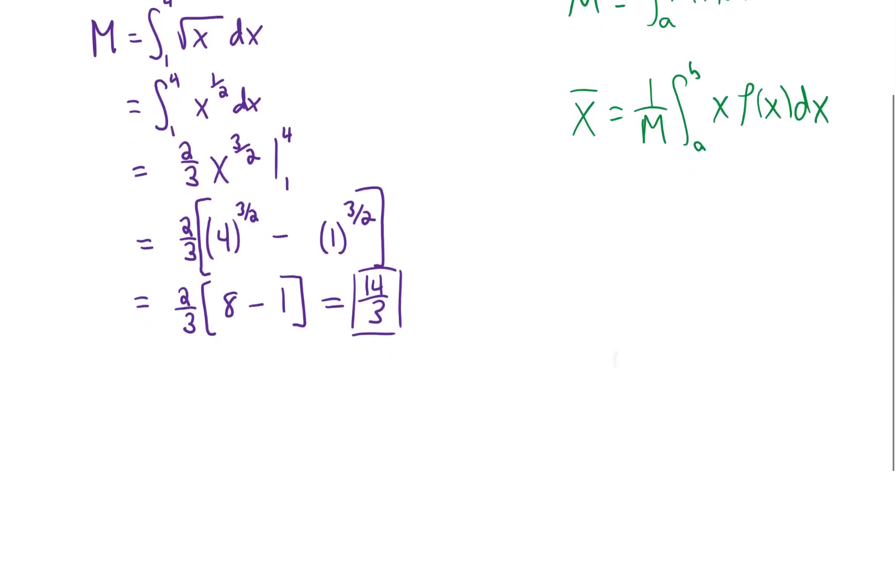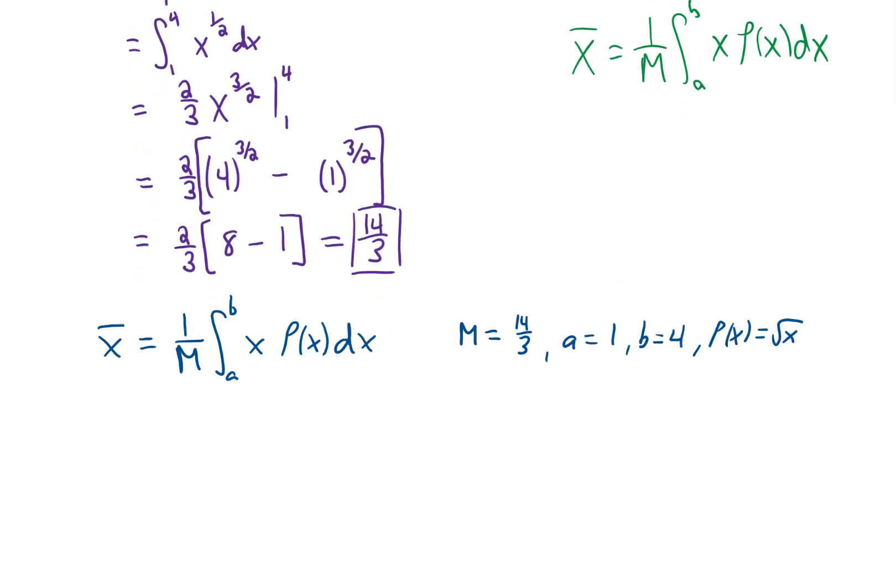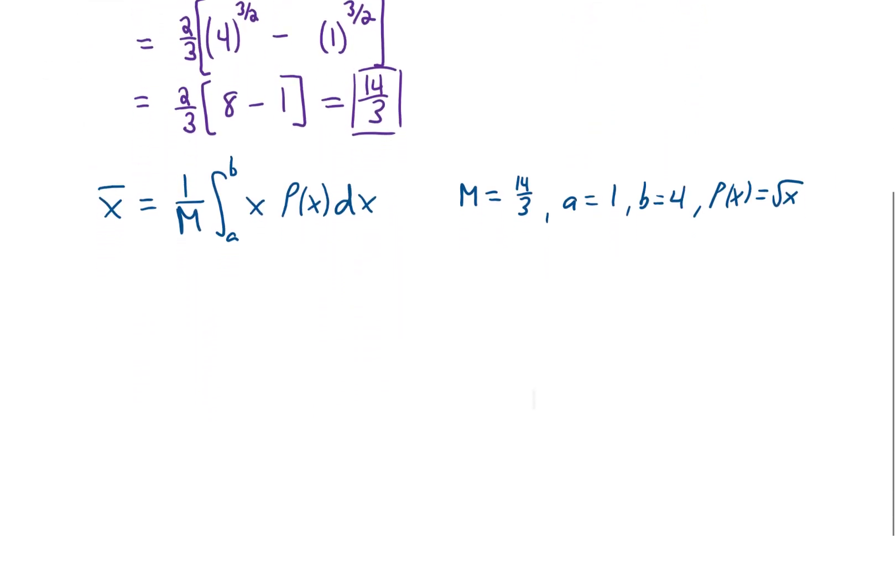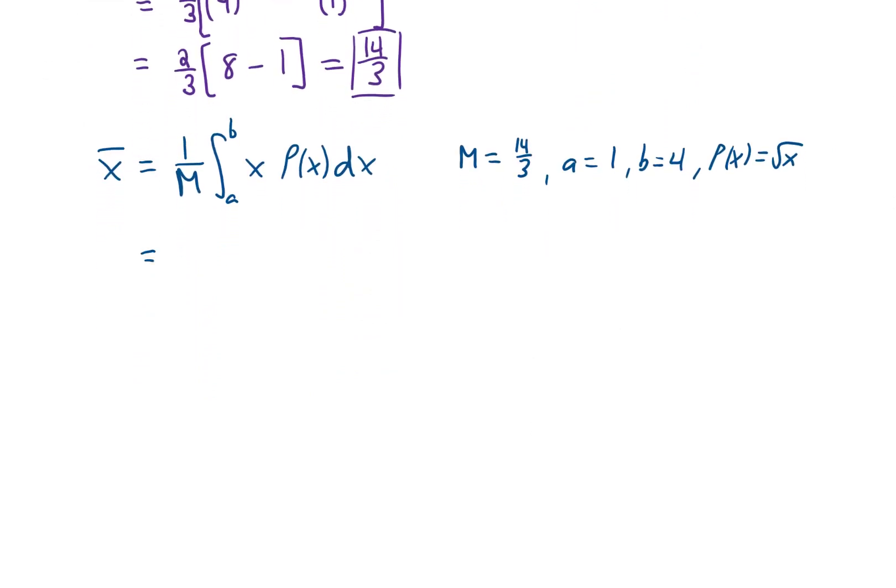Now, let's copy down the formula for the center of mass, and we can steal all of the information from the first half of the problem, plug it all into this integral, and let's see what we get. 1 over 14-thirds is 3 over 14.